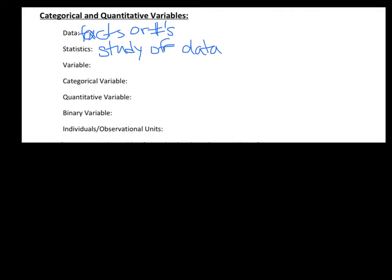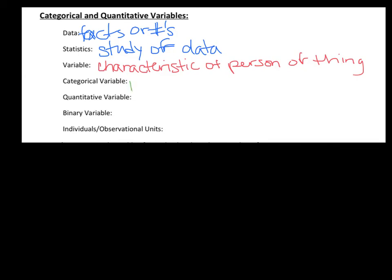The next term is variable. You've probably heard it in the past as being a letter that represents a number, but in this class you'll see it a little differently — I'm going to call it a characteristic of a person or thing. The next two terms — categorical and quantitative variables — you do need to know and be able to identify. A categorical variable is something that places an individual or object into a group. A quantitative variable is something that takes a numerical value.